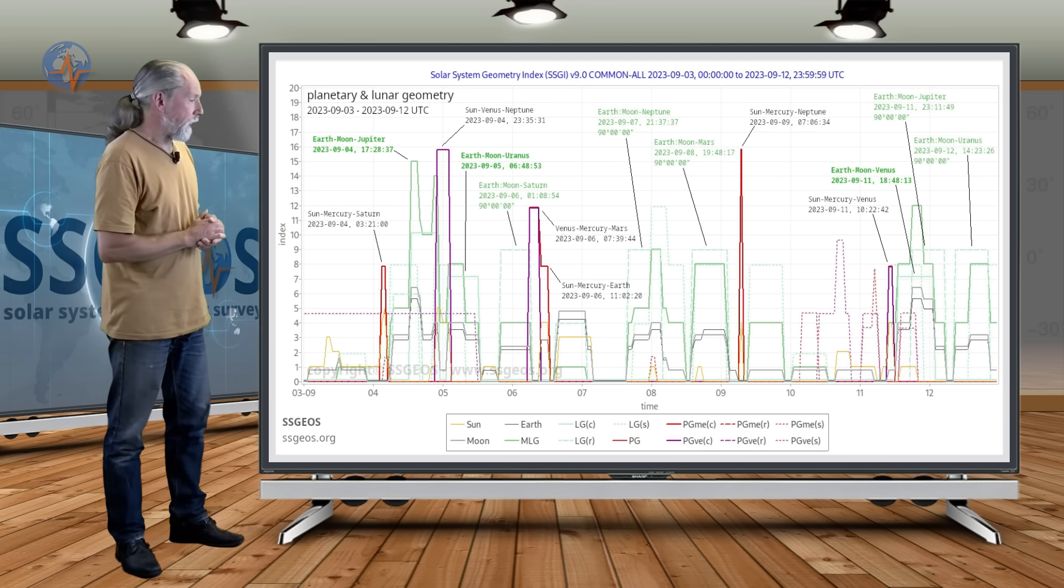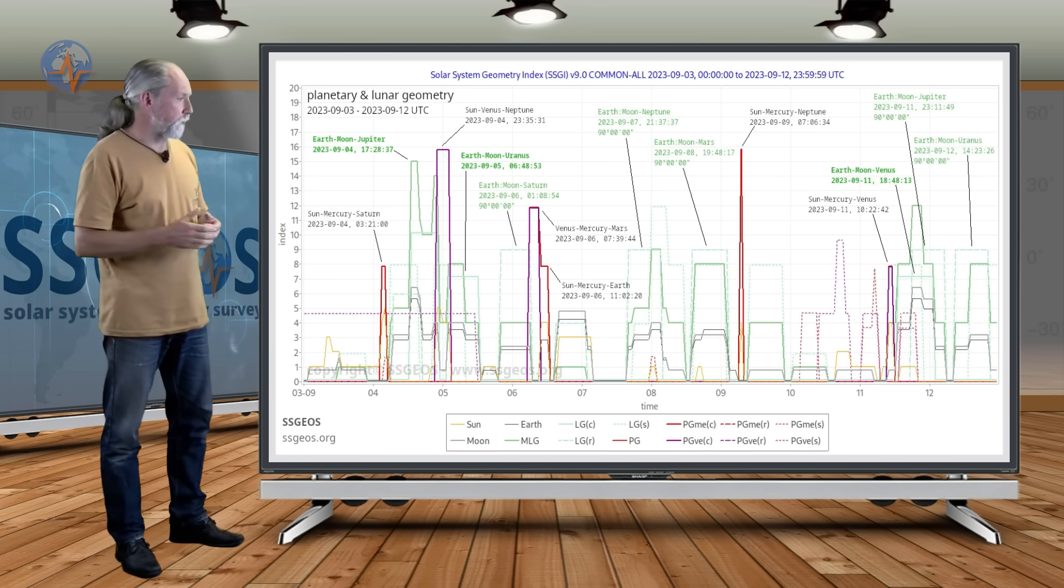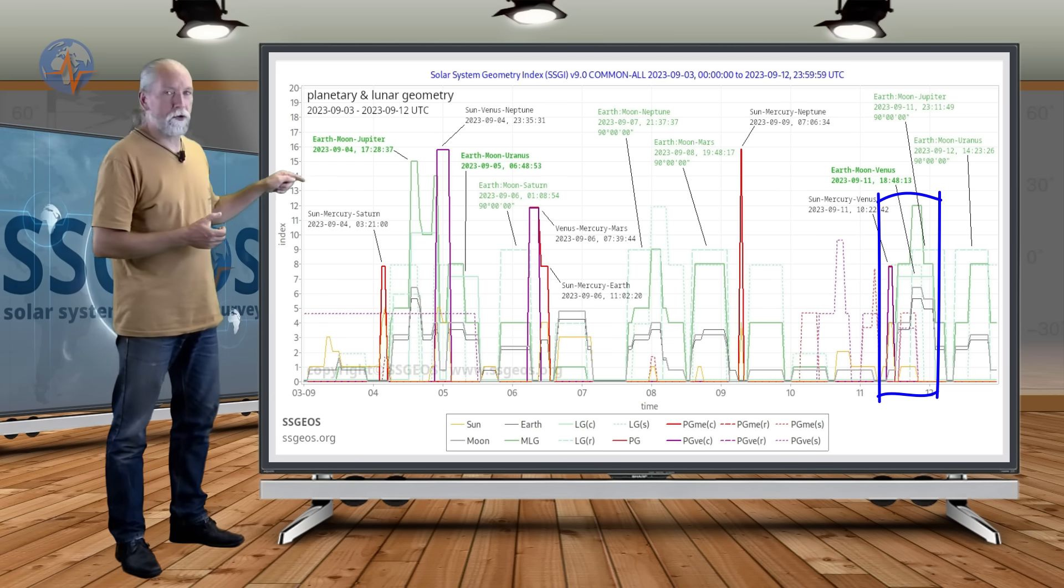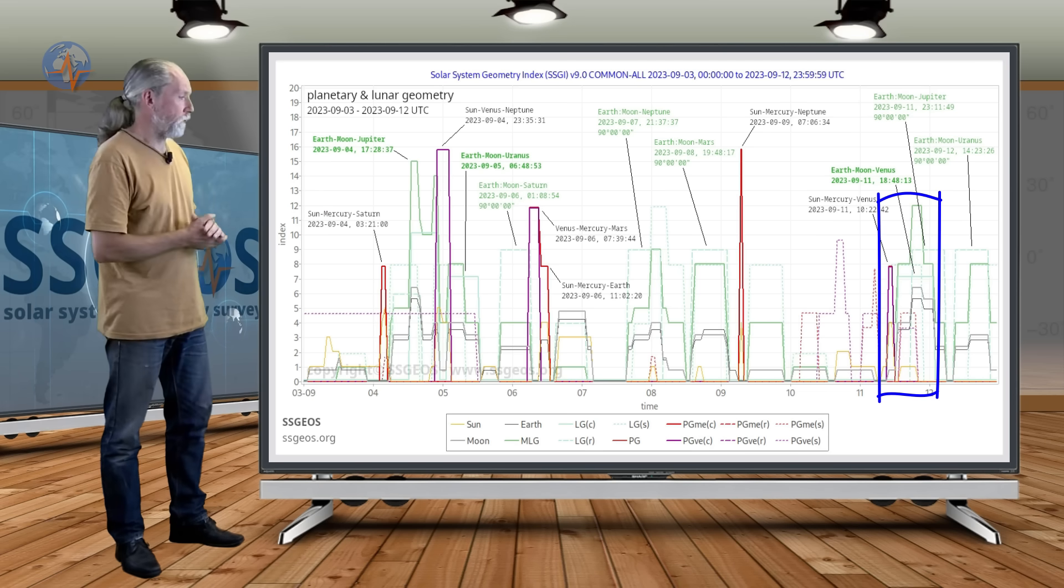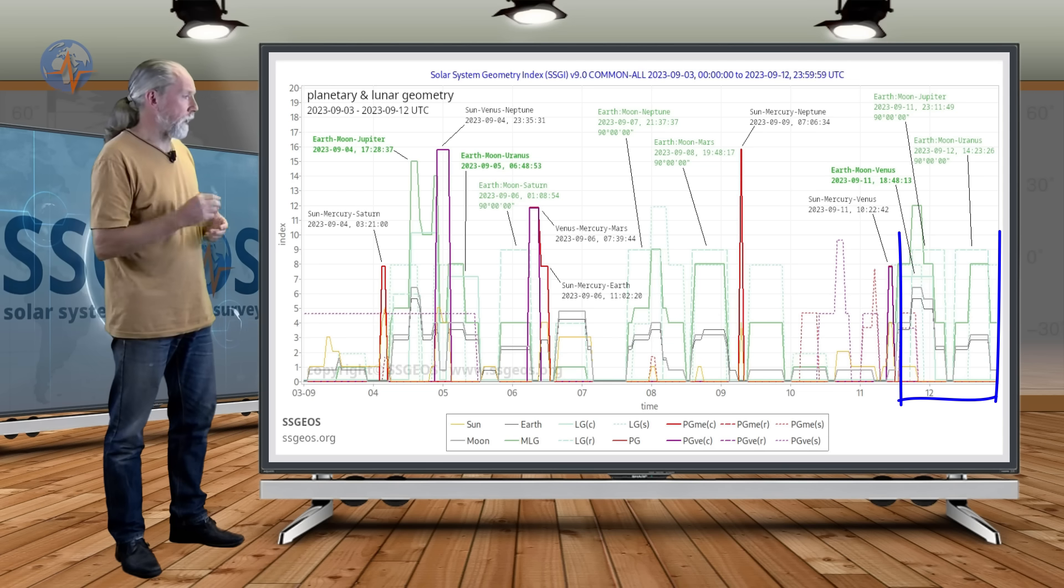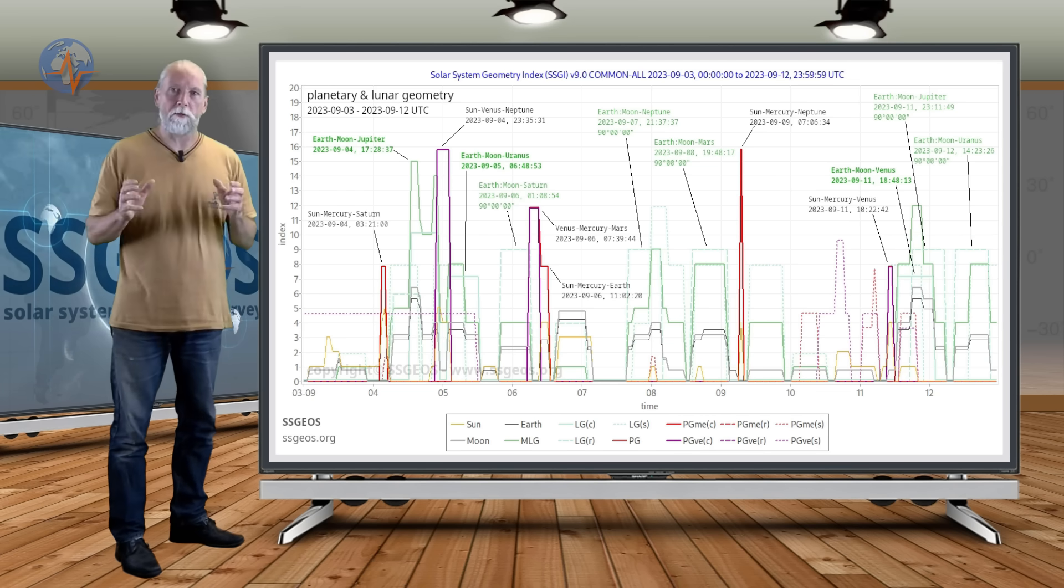We also have additional lunar geometry. We have Earth-Moon-Venus following Sun-Mercury-Venus on the 11th and on the 12th. We also have two right angles there with Earth-Moon-Jupiter and Earth-Moon-Uranus.